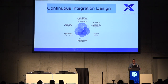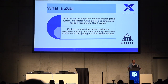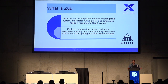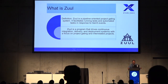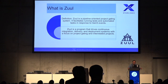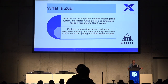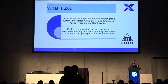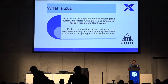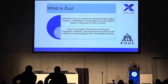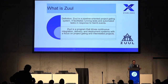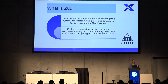Starting with continuous integration — Zuul — but exactly what is Zuul? Getting from the website, we can read that Zuul is a pipeline-oriented project gating system. It facilitates running tasks and automated tasks in response to Gerrit events. Zuul is a program that drives continuous integration, delivery, and deployment systems with a focus on project gating and interrelated projects. But is that it? Why can't we choose another tool?